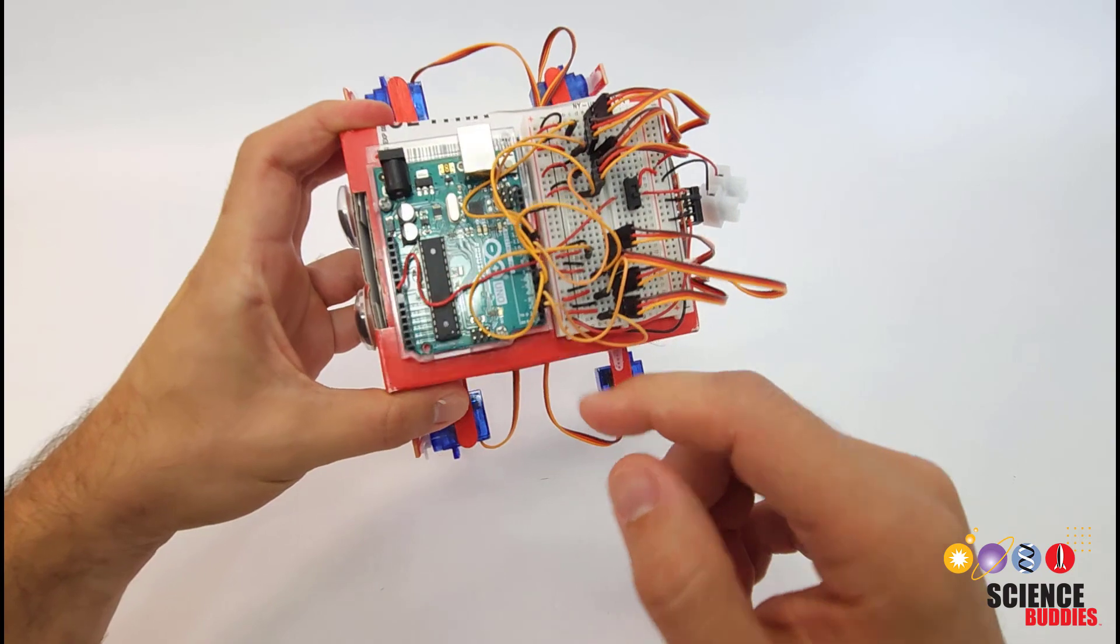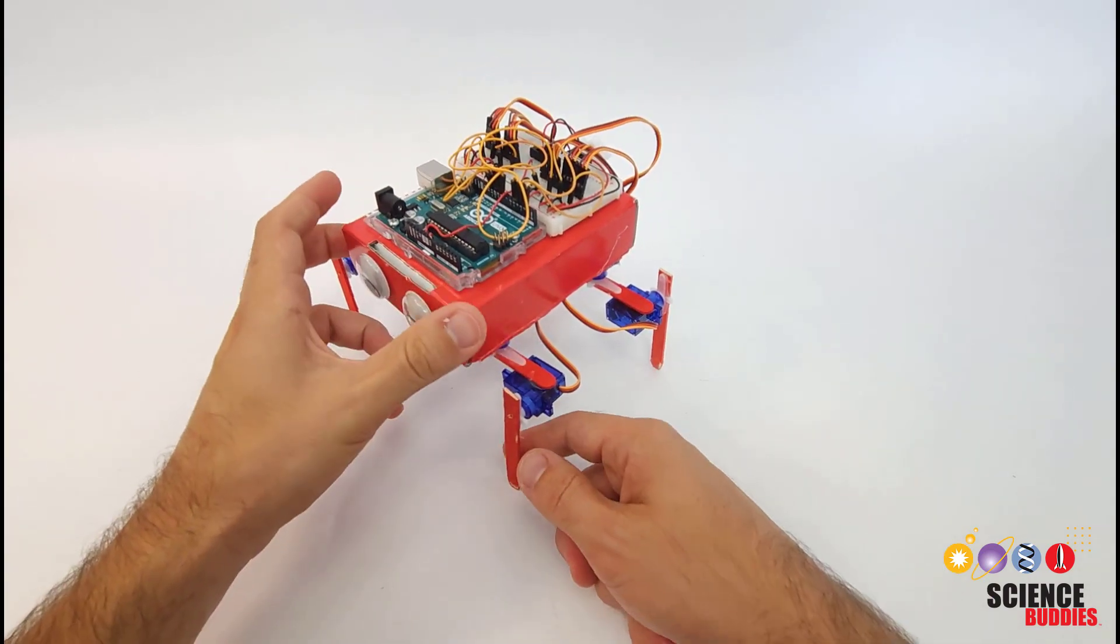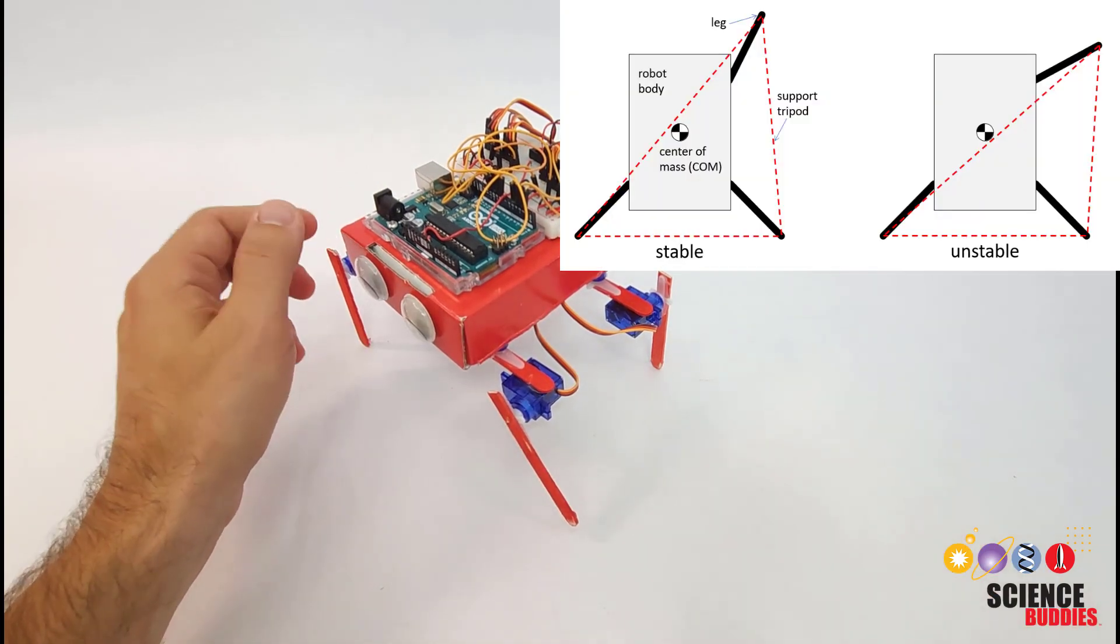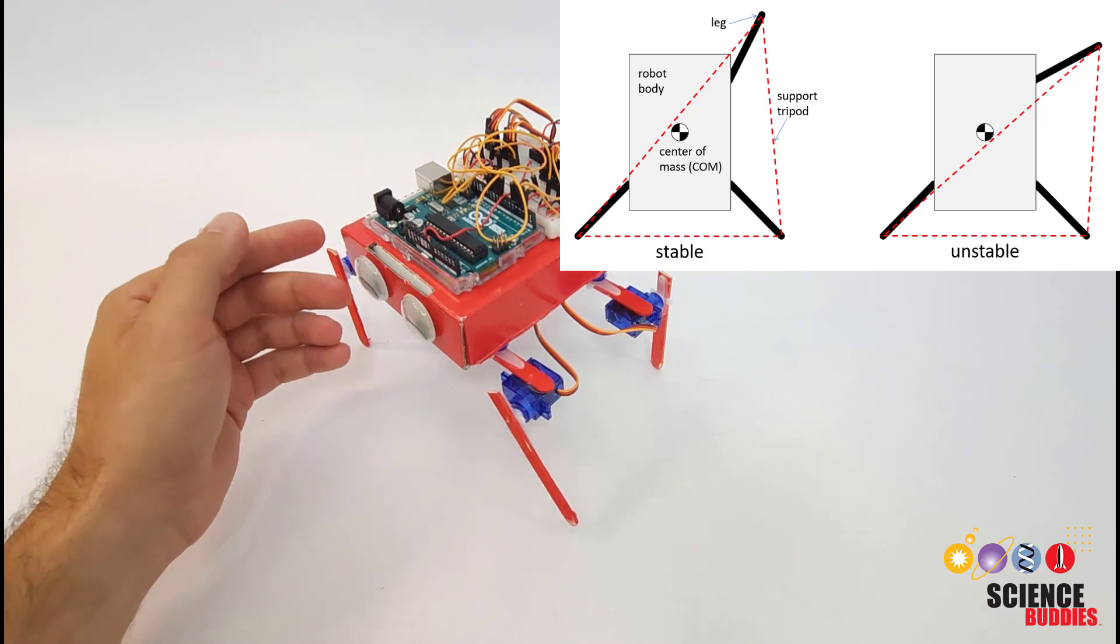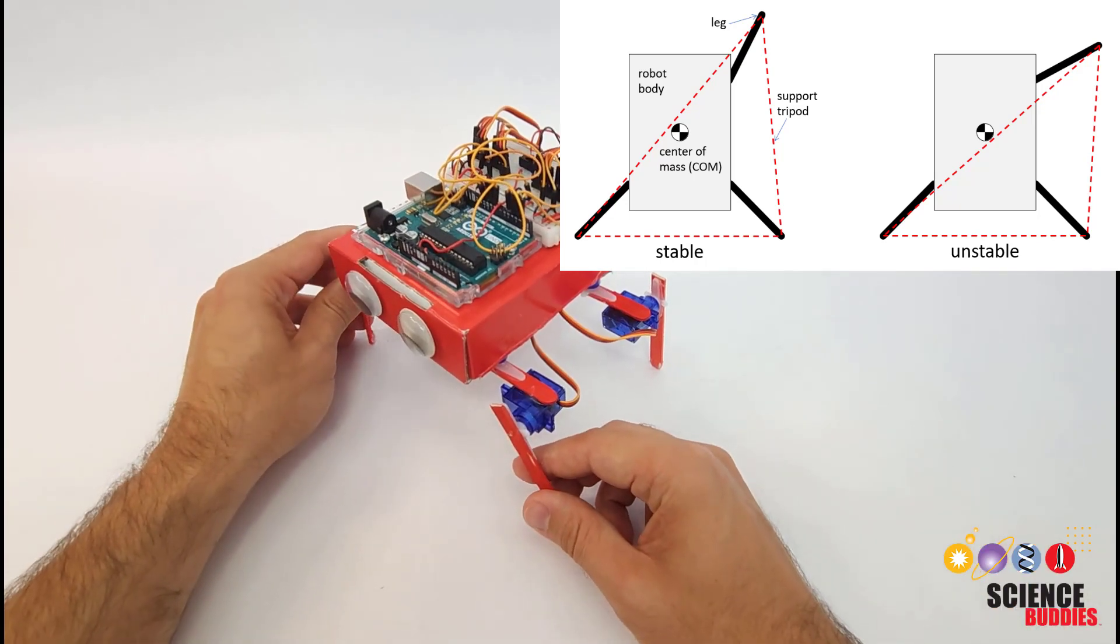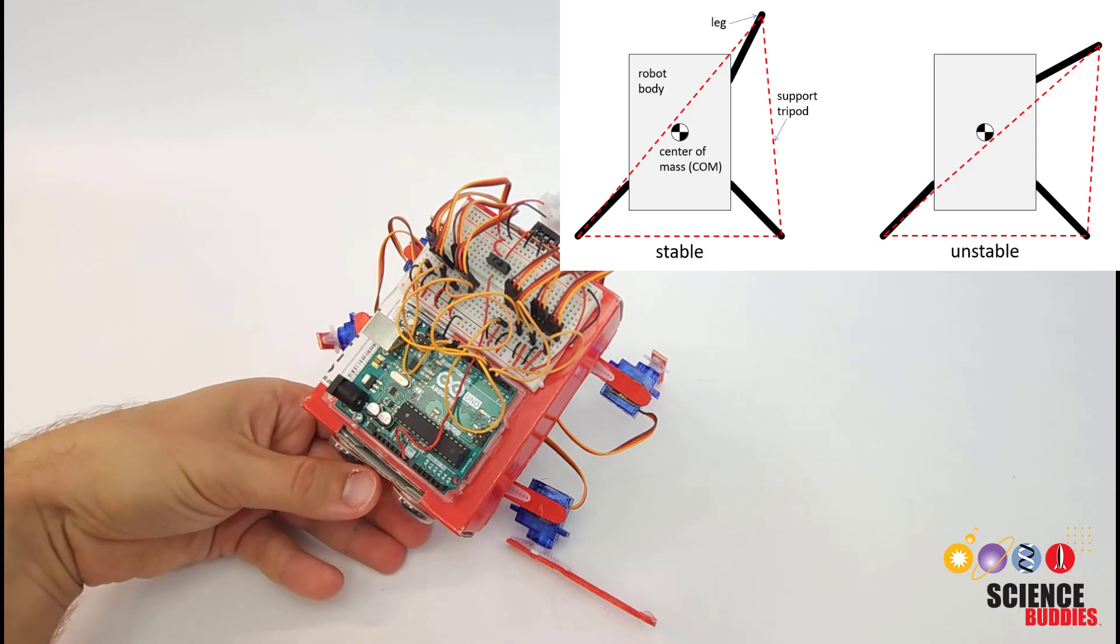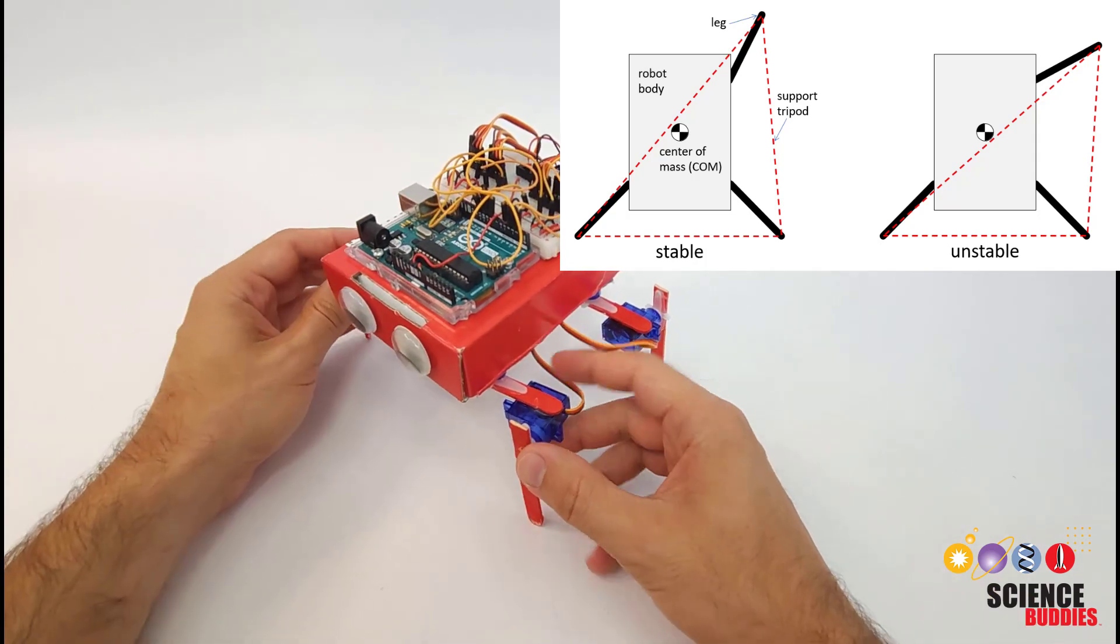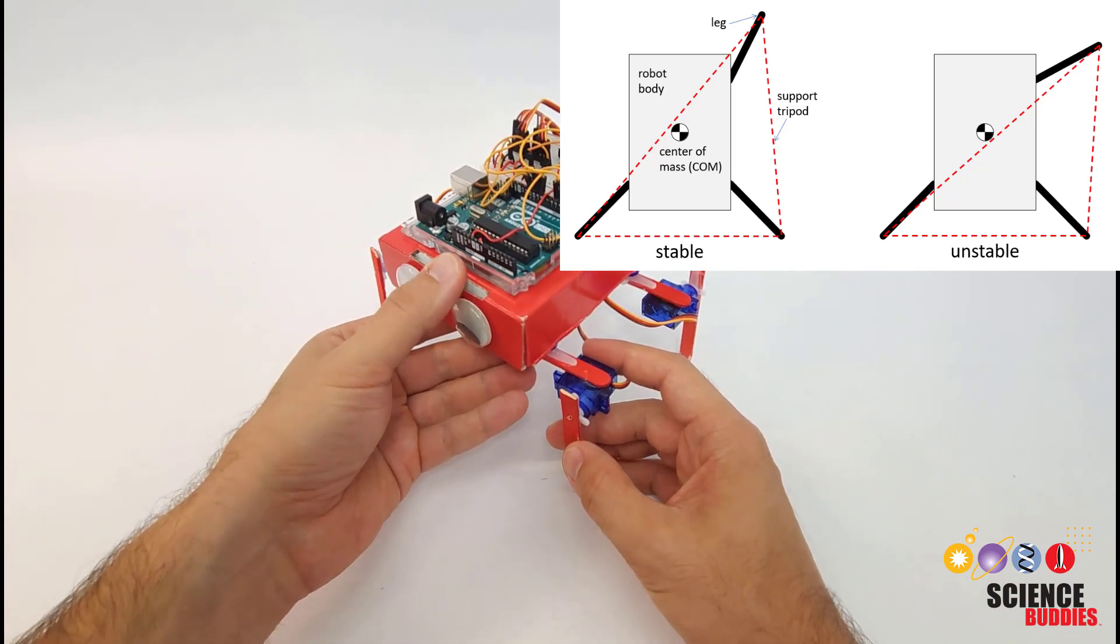One thing you have to consider here is the location of the robot's center of mass. Since you only have four legs when you lift one of them off the ground, the remaining three legs form a tripod and if the robot's center of mass falls inside that tripod then it will be stable and not fall over. However, if the robot's center of mass falls outside that tripod then it's going to be unstable and fall over. So you will have to think about that carefully when programming the angles for your servo motors to try and prevent the robot from falling.